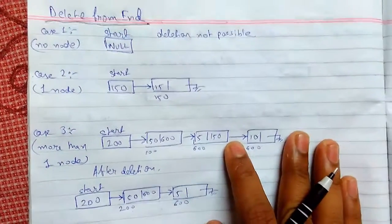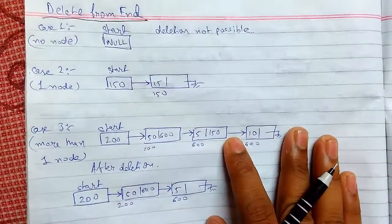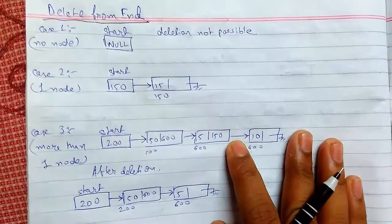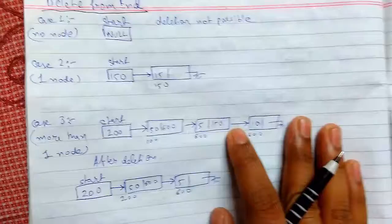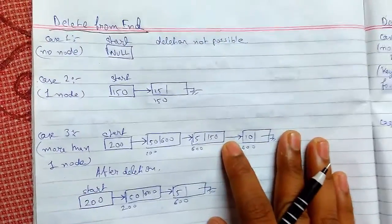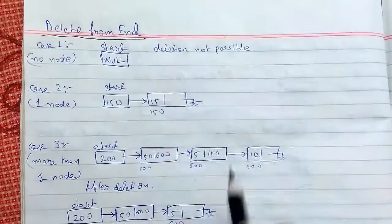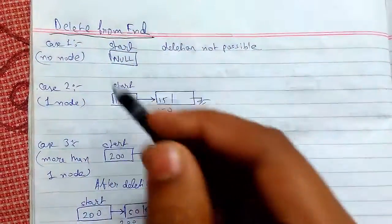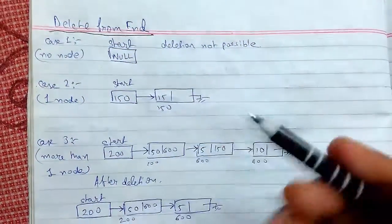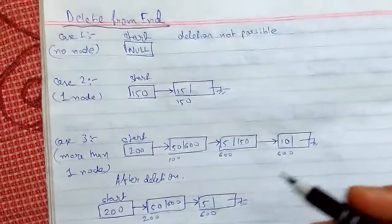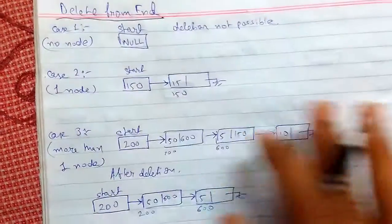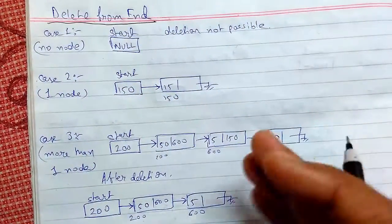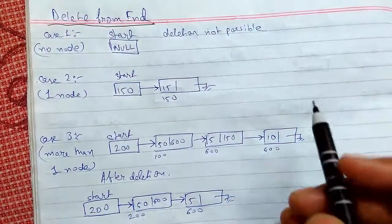Welcome back. Today we will be continuing data structures and algorithms. We will be learning about linked list, specifically the operation of deletion of a node from the end. I have made cases for it to understand the various scenarios and how it works.